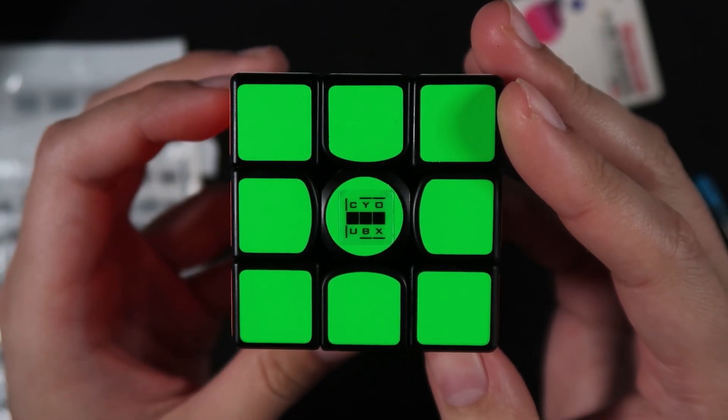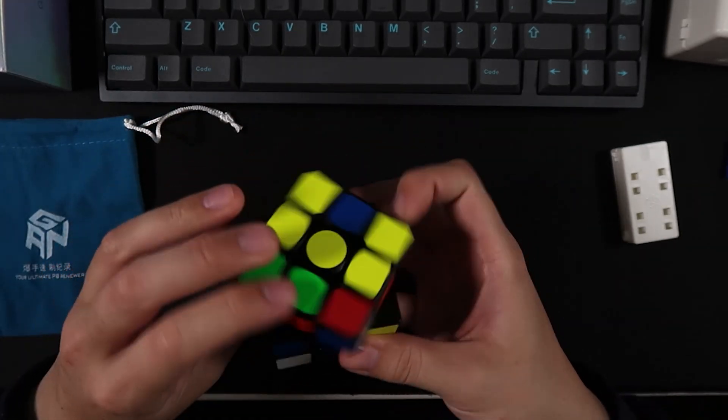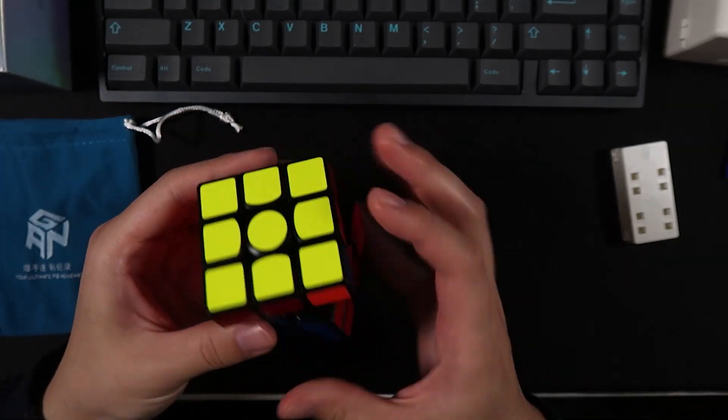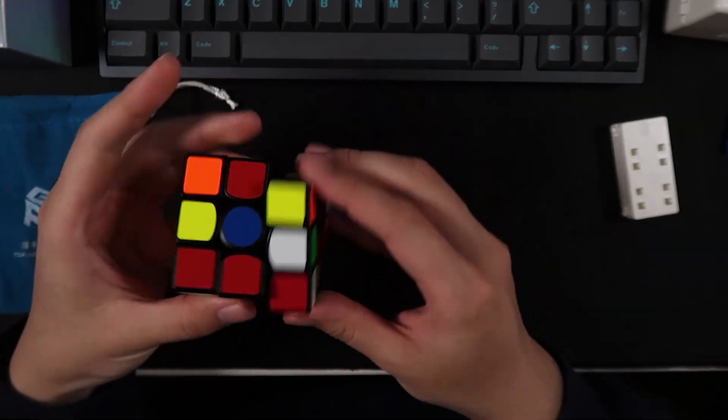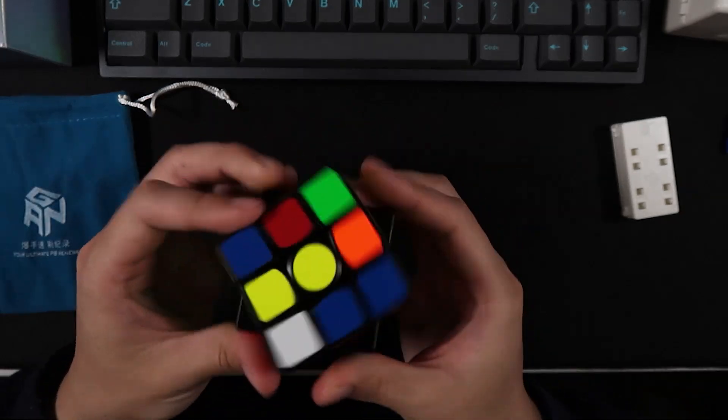After that, it's just a matter of breaking the cube in. I find that the 11M Pro does improve with breaking in pretty substantially. Even after just around 50 solves, the cube feels considerably nicer. I'm not really sure how to explain it, but it just feels really great. But yeah, that's how I set up my GAN 11M Pro. All pretty easy, fairly straightforward, but I really like the result.